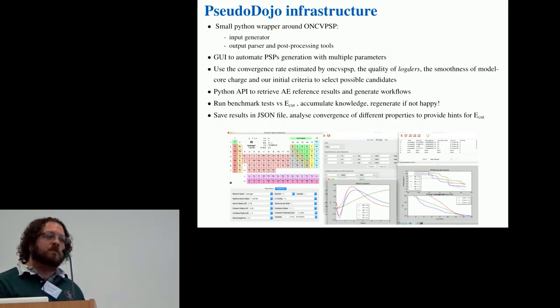So we didn't try to optimize automatically the pseudopotentials, but we were generating multiple possible candidates. We were looking at the convergence behavior estimated by the potential generator, the model core charge in real space including the derivative, and we were already filtering the candidates at this level.